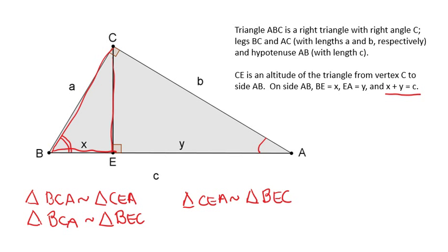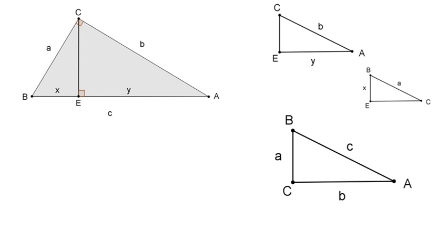All right. Now on the next slide, I've actually separated out these three triangles. It's often helpful to do that when working with similar triangles. On top, I have triangle CEA with the sides labeled, the small triangle BEC with sides labeled, and the entire triangle BCA.